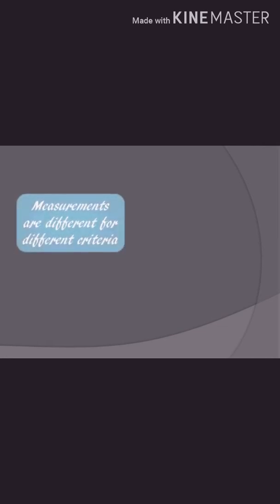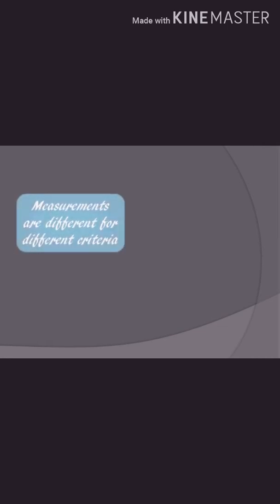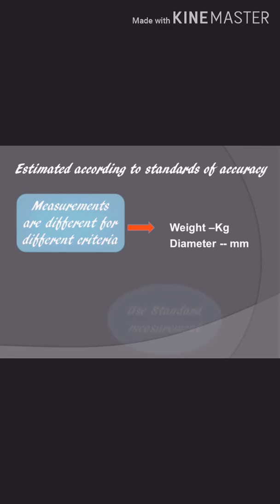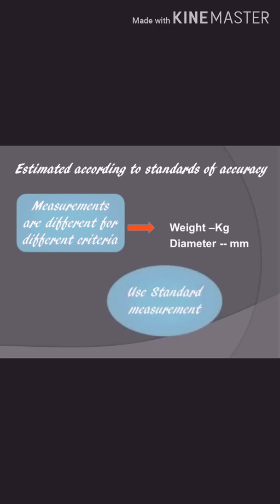Though the degree of measurement is different for different criteria, statistics should be estimated according to standards of accuracy. For example, weight can be measured through scales, diameter of a screw can be measured through millimeters — measurements differ for different criteria, but the specific standard of measurement must be followed.